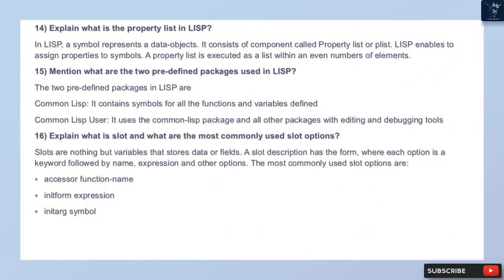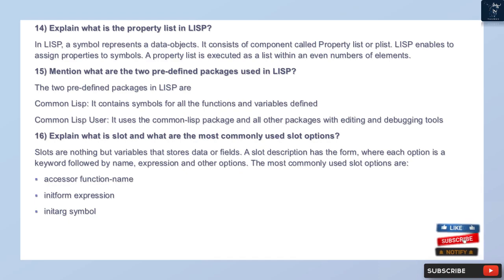Question 14: Explain what the property list is in Lisp. In Lisp, a symbol represents a data object. It consists of a component called a property list, or plist. Lisp enables you to assign properties to symbols. A property list is implemented as a list with an even number of elements.